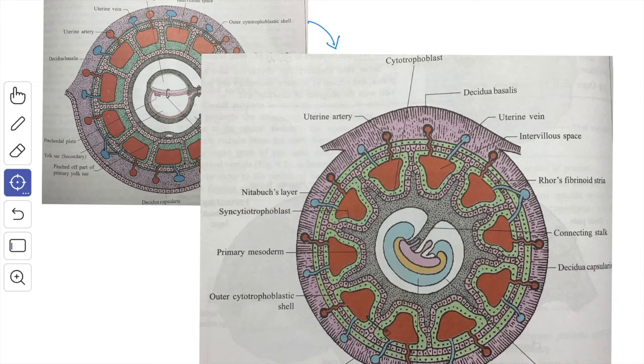The primary mesodermal cells of the chorion, they invade the central axis of the primary villae and they convert the primary villae into secondary villae. The cells of the primary mesoderm extend up to the distal end of the villae and they do not form the outer wall of the inter villus space.